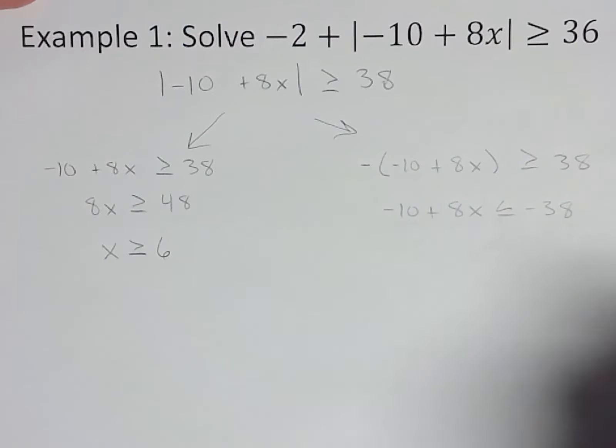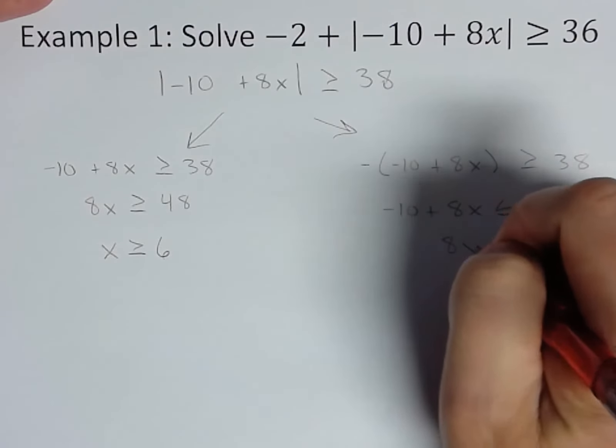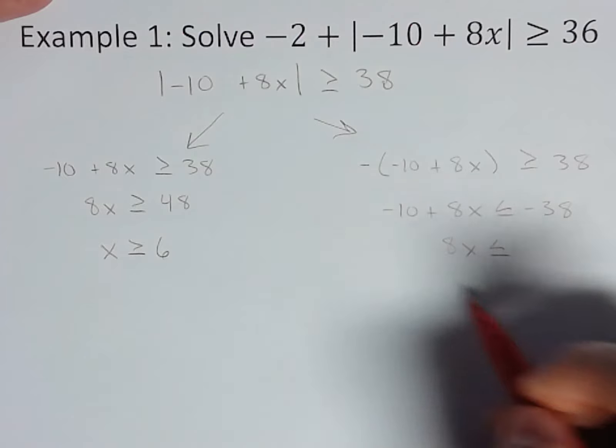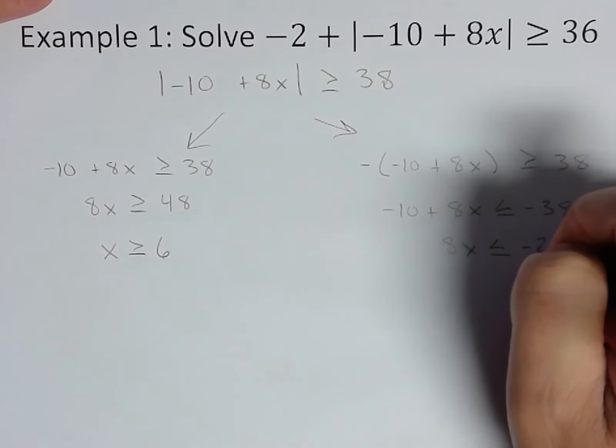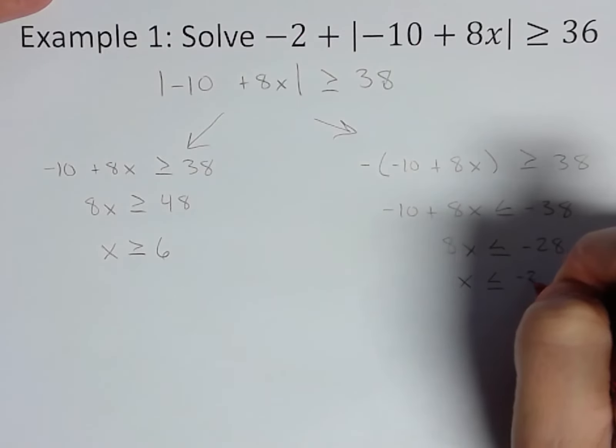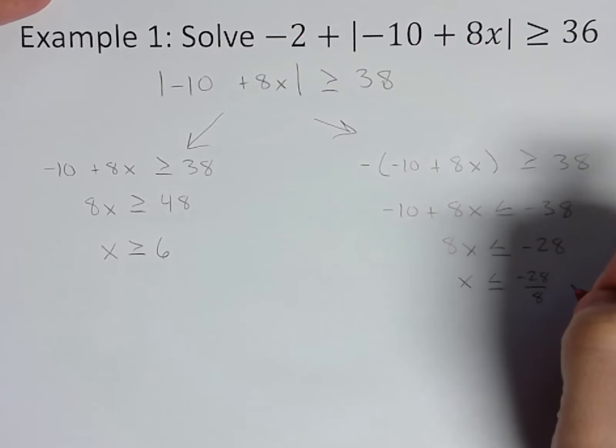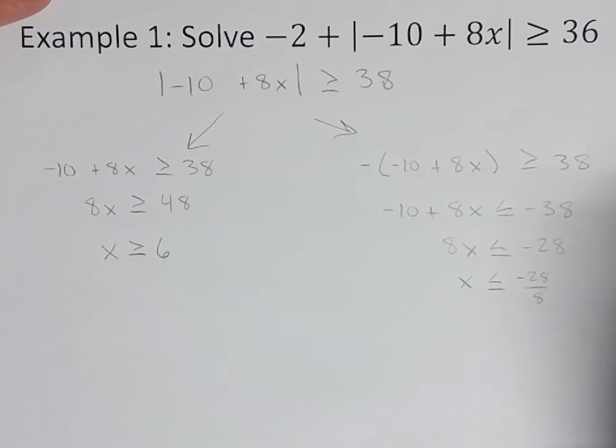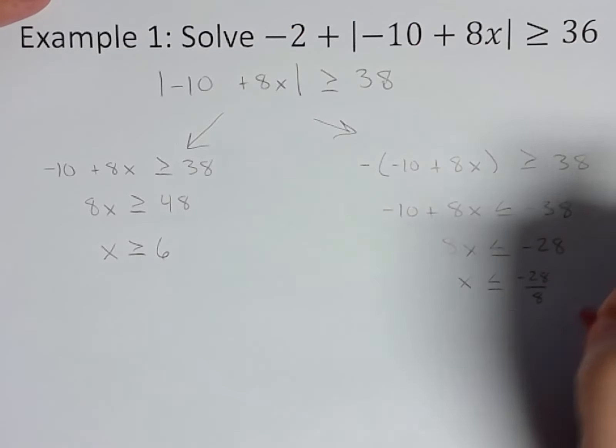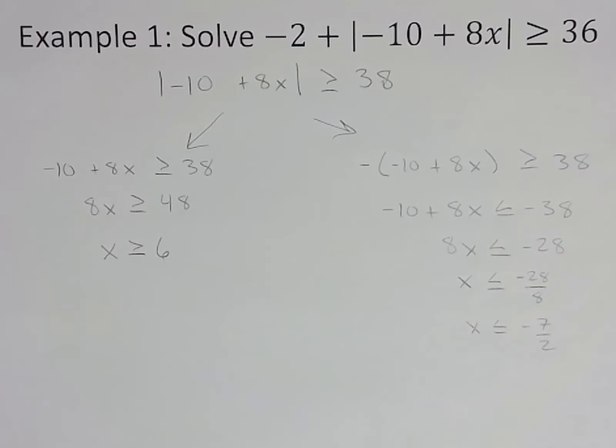And for my second equation, add that 10 over. 8x less than or equal to negative 28. 8x, and if we reduce that, we could take a 4 out of both of those, so x is less than or equal to negative 7 halves.